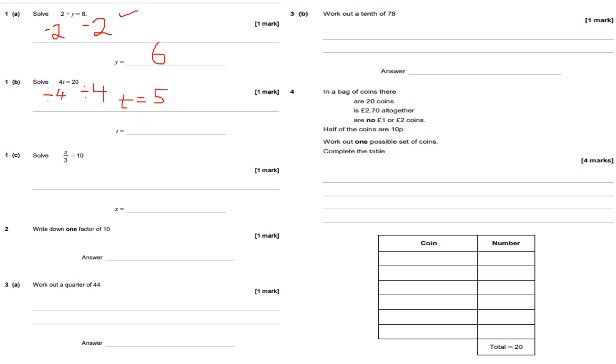For part c, solve x over 3 equals 10. So x divided by 3 is 10. The inverse operation of divided by 3 is times by 3, so timesing both sides by 3, balancing each side equally respectively, I get x equals 10 times 3. 10 lots of 3 is 30. That's the answer for part c.